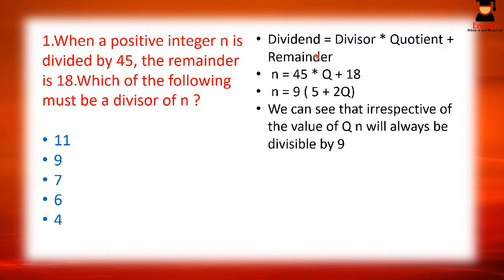Taking 9 common from 45q + 18, we get n = 9(5q + 2). Now, irrespective of the value of q, n will always be divisible by 9, because both 9 and (5q + 2) are factors in multiplication. Therefore, 9 must always be a divisor of the positive integer n.